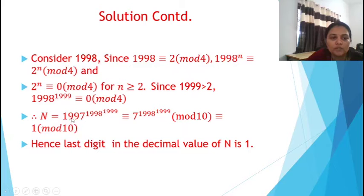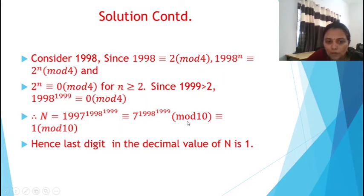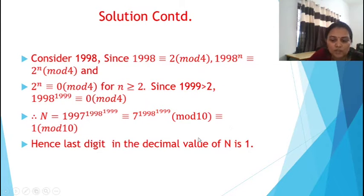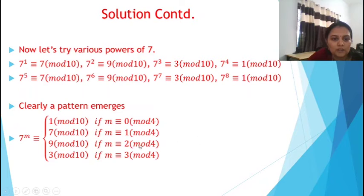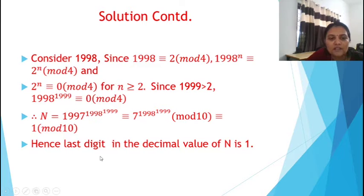Therefore, 1997 raised to 1998 raised to 1999 is congruent to 7 raised to (1998^1999) mod 10, which is congruent to 7 raised to 0 mod 10, which equals 1 mod 10. Hence, the last digit in the decimal value of n is 1.